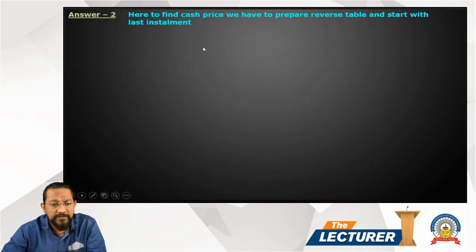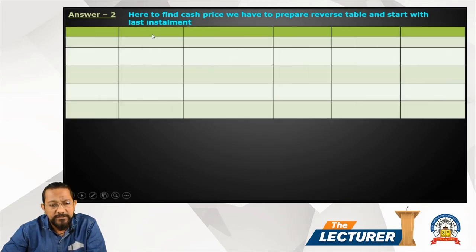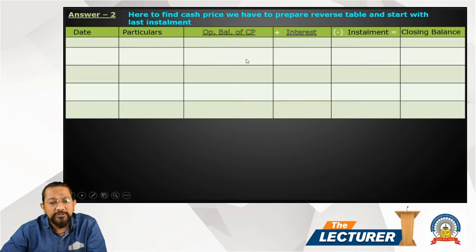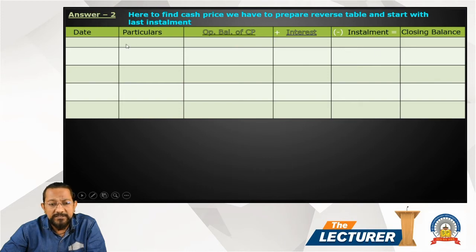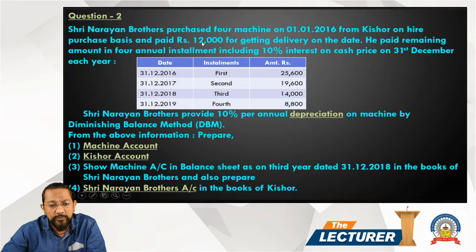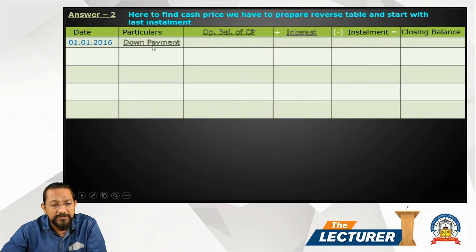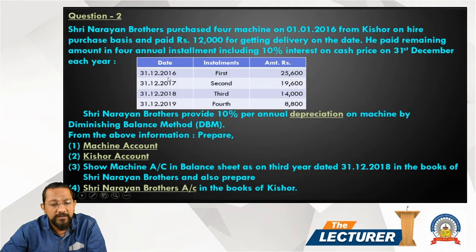To find the cash price, we start with the reverse table beginning from the last installment. The table format includes: date, particulars, opening balance of cash price, plus interest, minus installment, and closing balance. First, the down payment is 12,000. Then in December of year one, the first installment is 25,600.